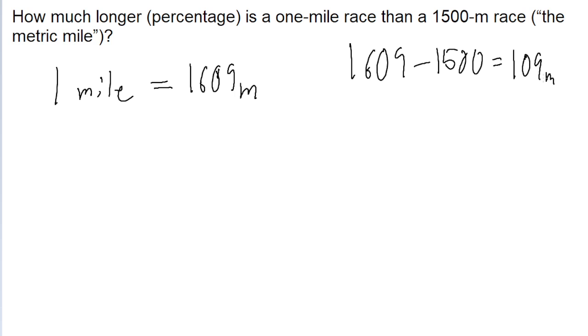So the mile race is 109 meters longer than the 1,500 meter race. So to find the percentage, we just take 109 meters and divide by 1,500 meters. And this will give us the percentage of how much longer the mile is opposed to the 1,500 meter.